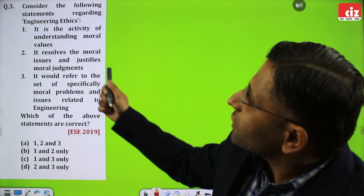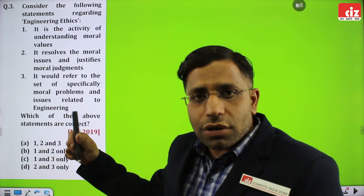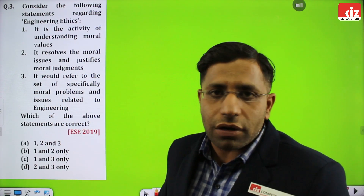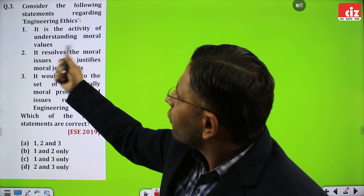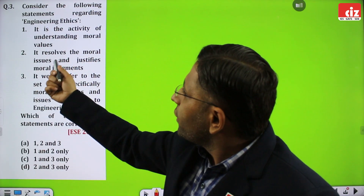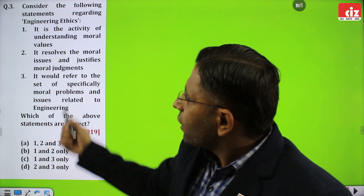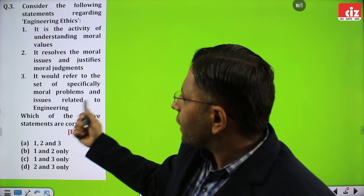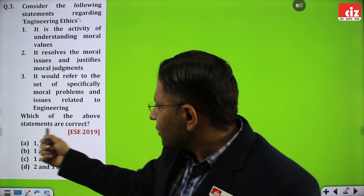The third question: consider the following statements regarding engineering ethics. This question is directly from the application of engineers in their work. The statements are: (A) it is the activity of understanding moral values; (B) it resolves the moral issues and justifies moral judgments; (C) it refers to the set of specifically moral problems and issues related to engineering. Which of the statements are correct?